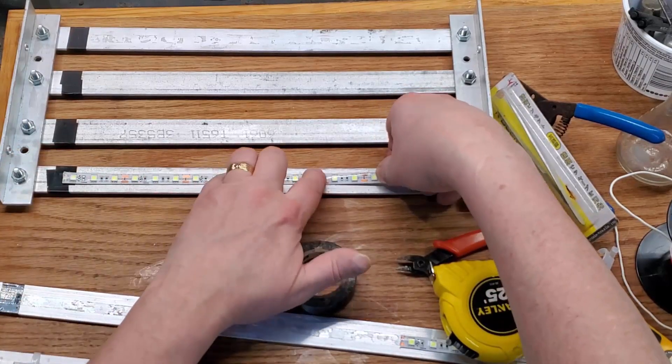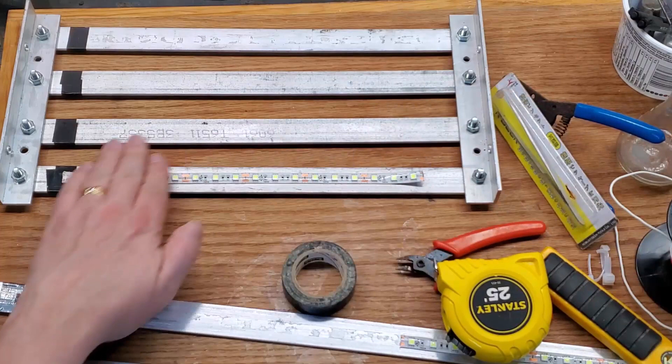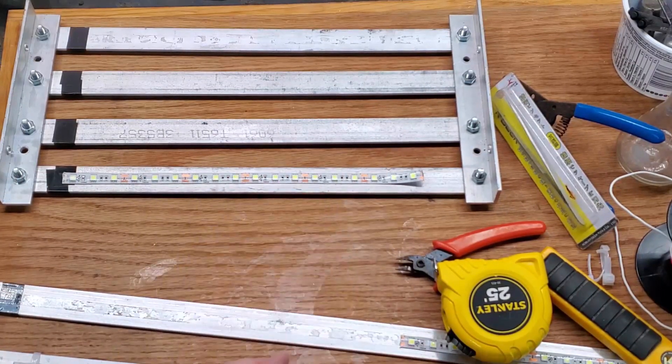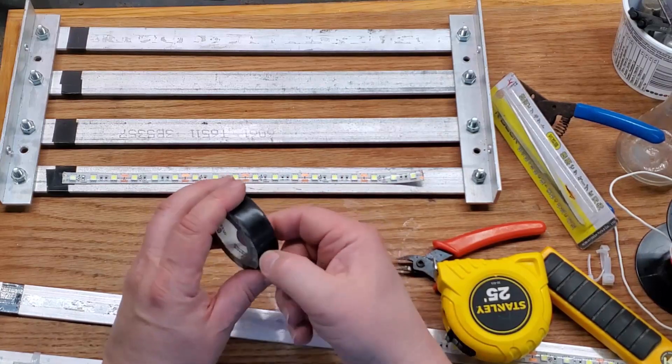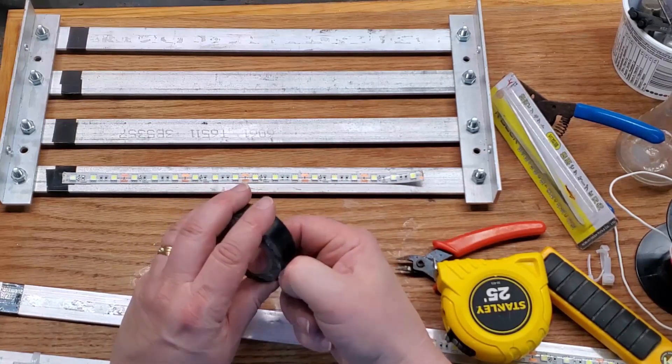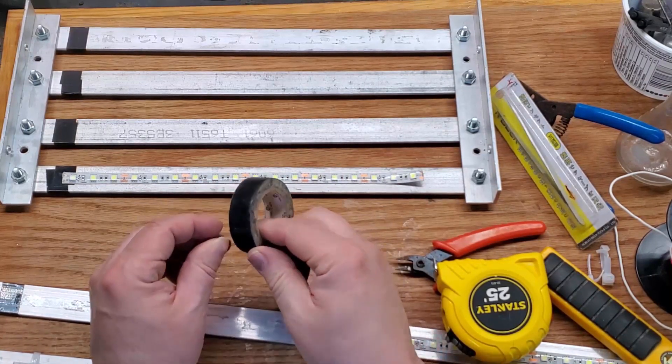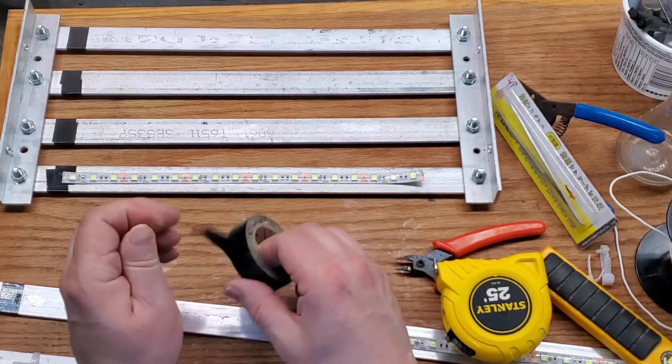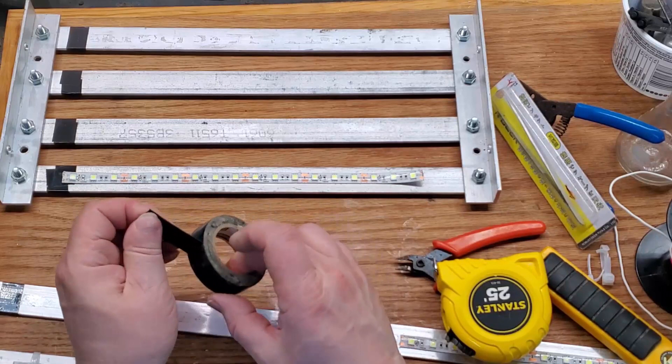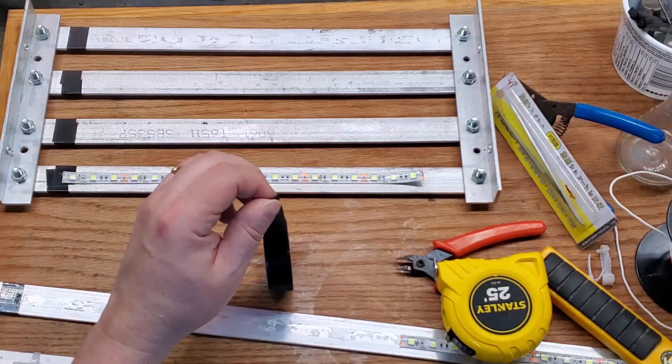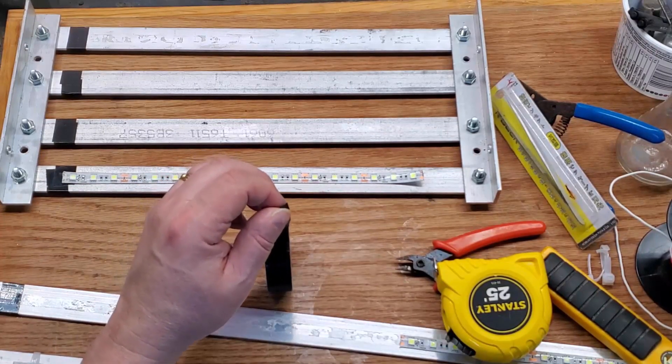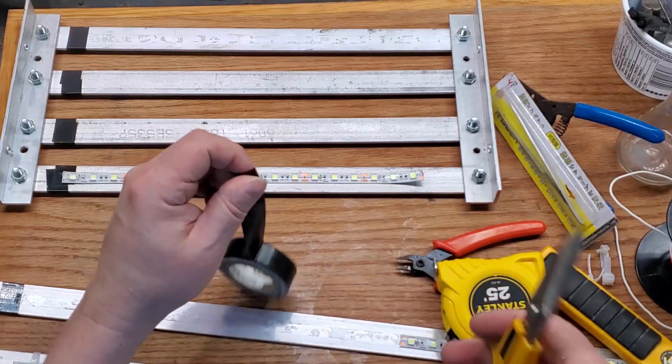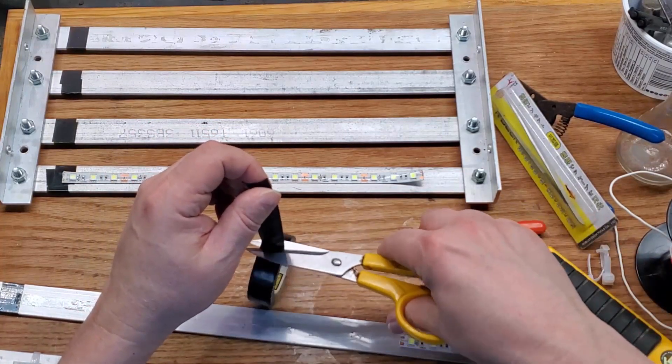One other thing I want to mention: you'll notice on the end brackets, the two vertical parts, there are two holes drilled in each. The reason they're there is I want to keep this as flexible as possible. I want to be able to change the height. Currently when I set this up, I'm going to have it right down over top of the filter to give it maximum light because I want to grow the hornwort or whatever other plant or algae as much as possible.